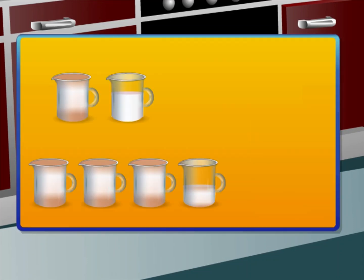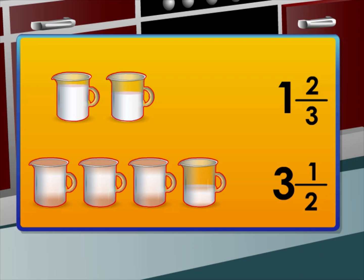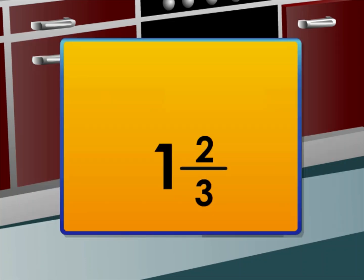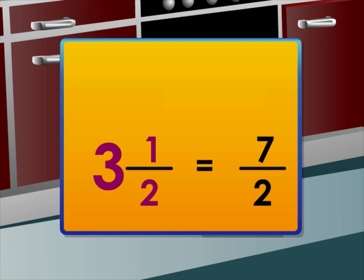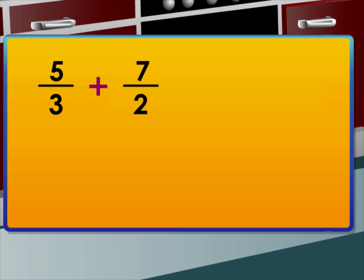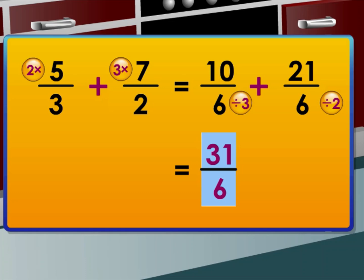Narmada uses two types of flour for her cake. She used one and two thirds cups of white flour, and three and a half cups of whole wheat flour. How much flour did she use in total? We can add by converting them to improper fractions. Convert one and two thirds to an improper fraction: it is five over three. Three and a half is seven over two. Before we add, they must have the same denominator. The least common multiple of three and two is six. Six divided by three is two, and two times five is ten. Six divided by two is three, and three times seven is twenty-one. Add the numerators to get thirty-one over six. Convert to a mixed number: five and one sixth.